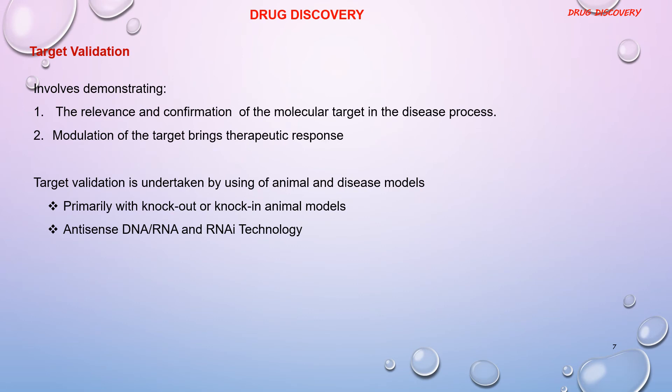Target identification is followed by target validation. It involves demonstrating proof and confirmation of the target in the disease process, and whether modulation of the target brings about the therapeutic response. It is usually done using knock-in and knock-out animal models. Many neurodegenerative disease models are developed by generating mutant genes. Another method is by use of antisense DNA, RNA, and interfering RNA. In the antisense method, complementary antisense compounds bind to the target sequence forming a double strand, thereby inhibiting its action. In the case of interfering RNA, gene silencing is done.